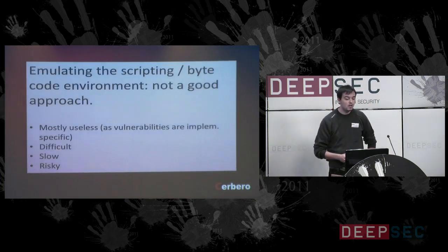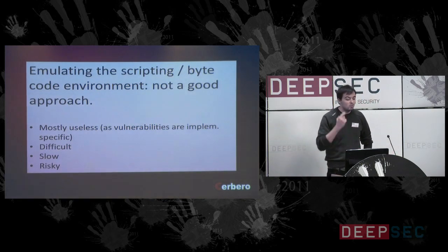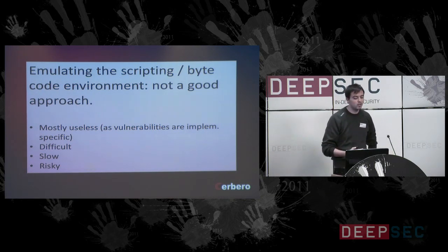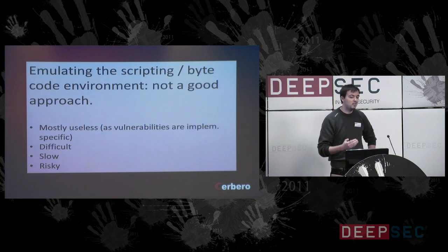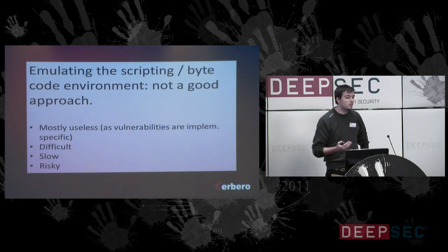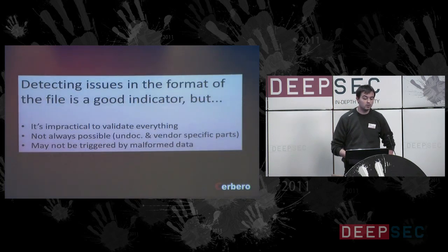How do you detect zero-day shellcode exploits? One way is to emulate the scripting and bytecode environment. But this is not a good approach because usually buffer overflows are implementation-specific. So in this case, it's mostly useless, it's difficult because it takes a lot of work, it's slow, and it's also risky because a buffer overflow can happen even in our emulator.